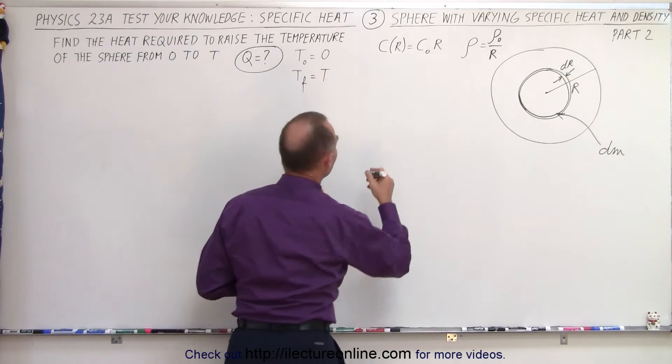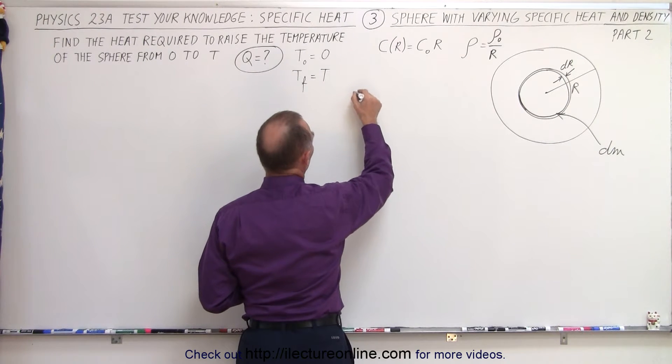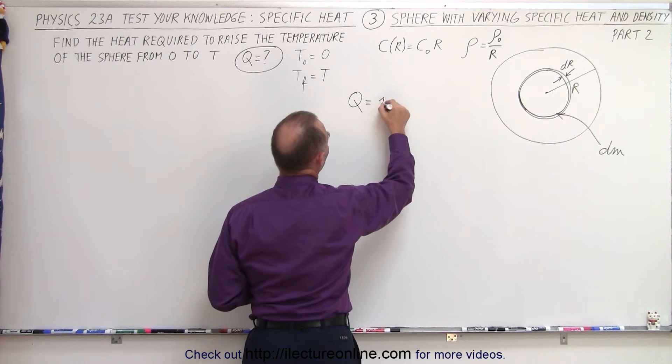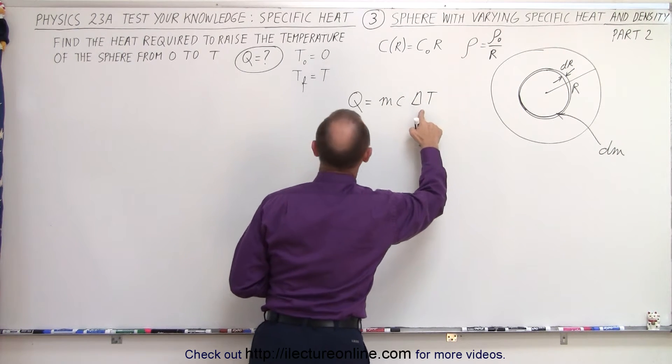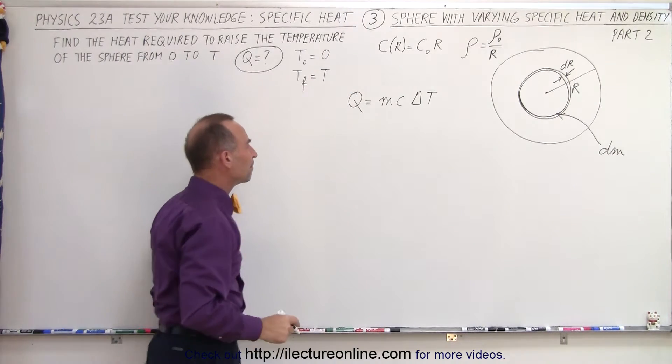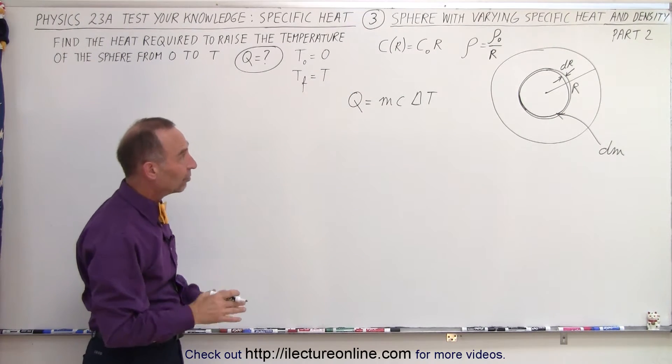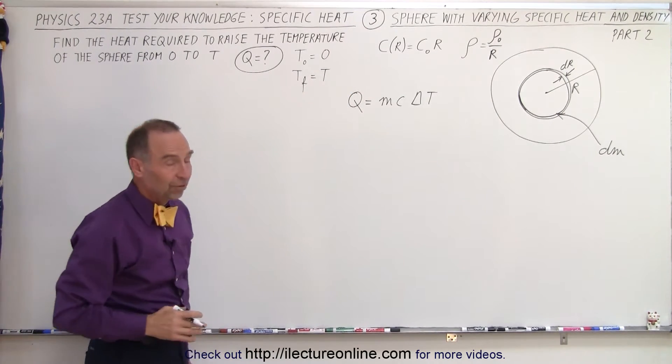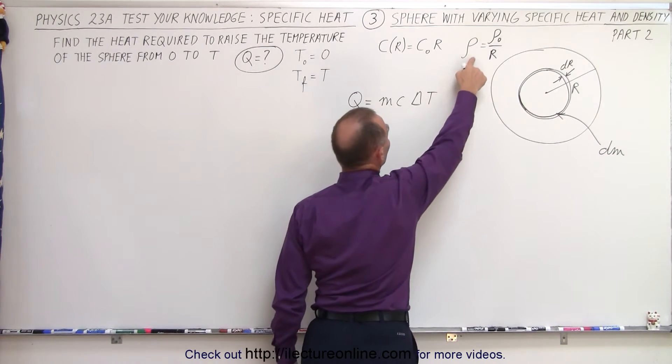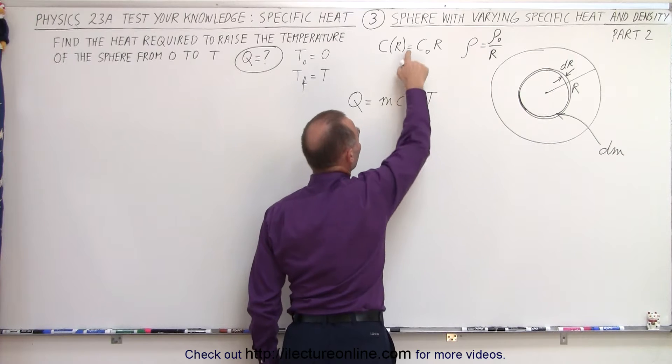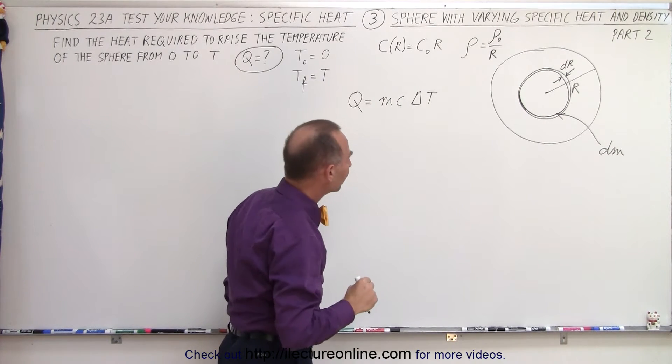So the equation again that we're going to start with is that Q, the amount of heat required, is going to be equal to MC delta T. And of course, delta T is the temperature from zero to T. M is the mass of the sphere, and C is the specific heat. But now we know that the mass is related to the density, which is a variable, and C is also a function of R. So how do we figure that out?